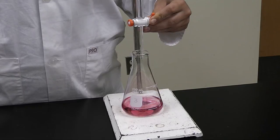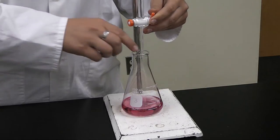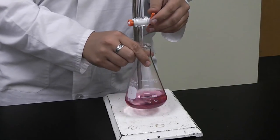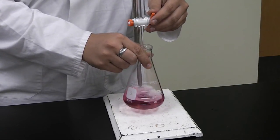Slowly turn the stopcock until your solution begins dripping out of the burette. With one hand on the Erlenmeyer flask and the other on the stopcock, gently swirl the solution.